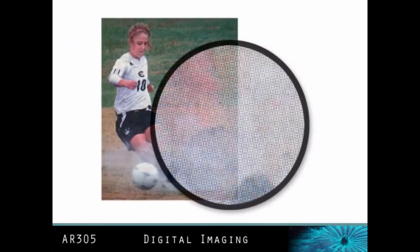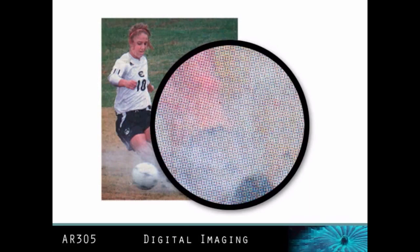A close-up look at the newspaper example reveals the halftone dots of ink used to reproduce this continuous toned image at 100 LPI. Because of the poor quality of newsprint, you will notice that the halftone dots are not very crisp or sharp. One reason that newspapers do not print with a higher resolution halftone line screen is because of the poor quality of paper — the smaller halftone dot would not hold up on this type of paper.